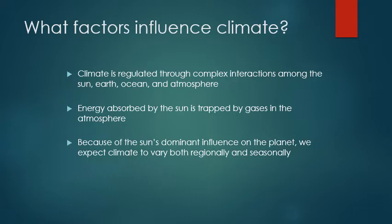What factors influence climate? It's regulated through very complex interactions among the sun, earth, ocean, and the atmosphere. Energy is absorbed from the sun and trapped by gases in the atmosphere. Because of the sun's dominant influence, we expect the climate to vary both regionally — the sun's angle hitting the earth affects what biomes we have — and seasonally. Different biomes across the earth are essentially in different climates, varying both regionally and seasonally.